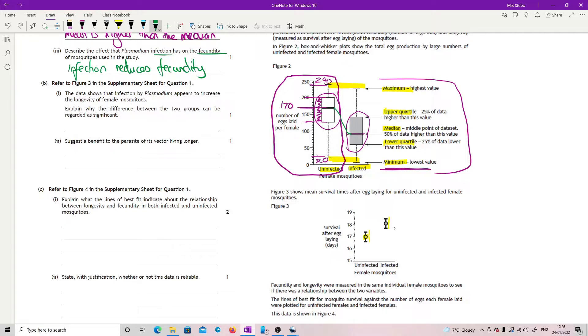Data shows that infection appears to increase the longevity of female mosquitoes. Explain why the difference between the two groups can be regarded as significant. Well this is because we are looking at our range in here, or sorry not a range - error. So in this point we have no overlap in the error bars so that makes it statistically significant. So no overlap in error bars.